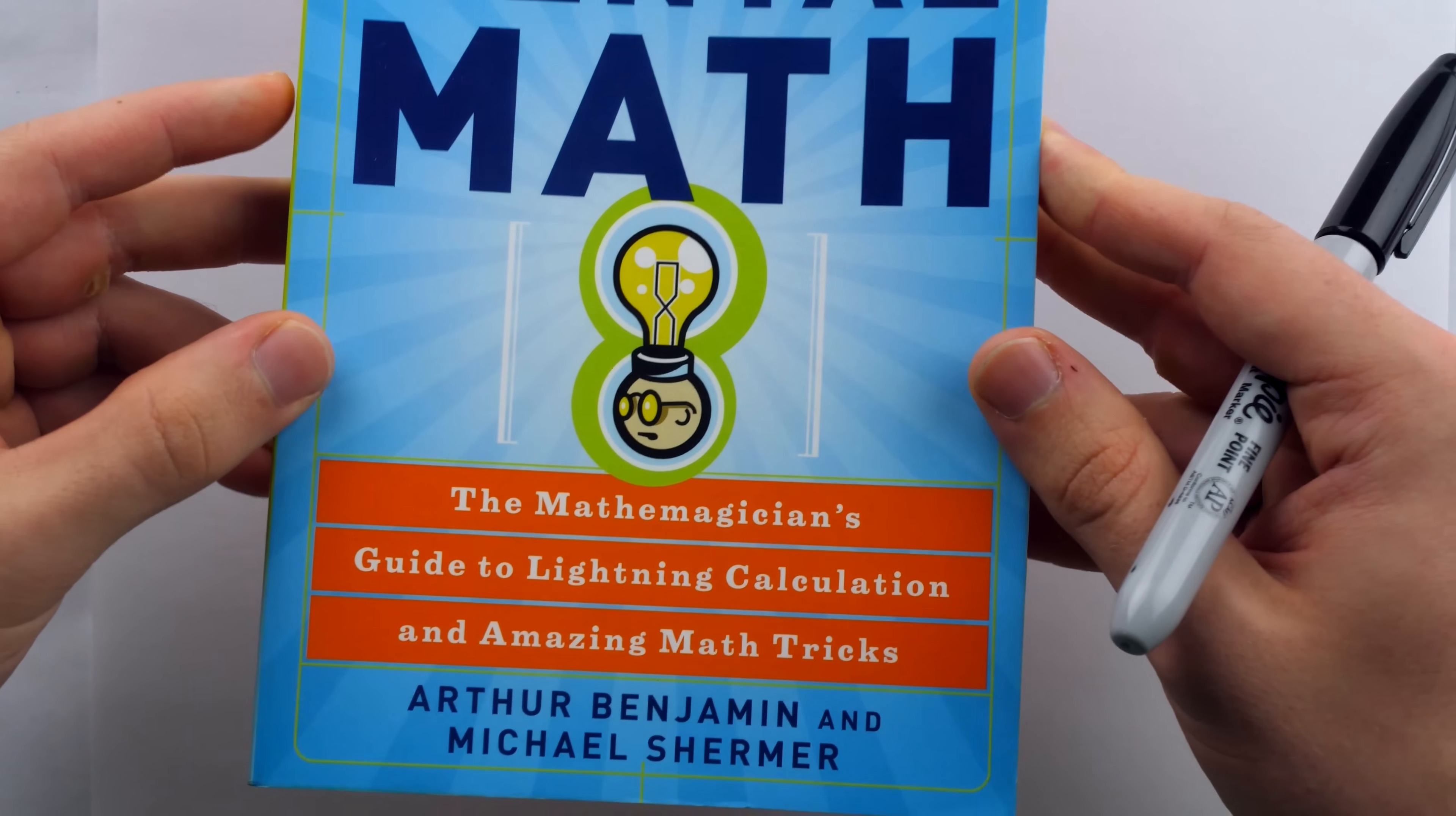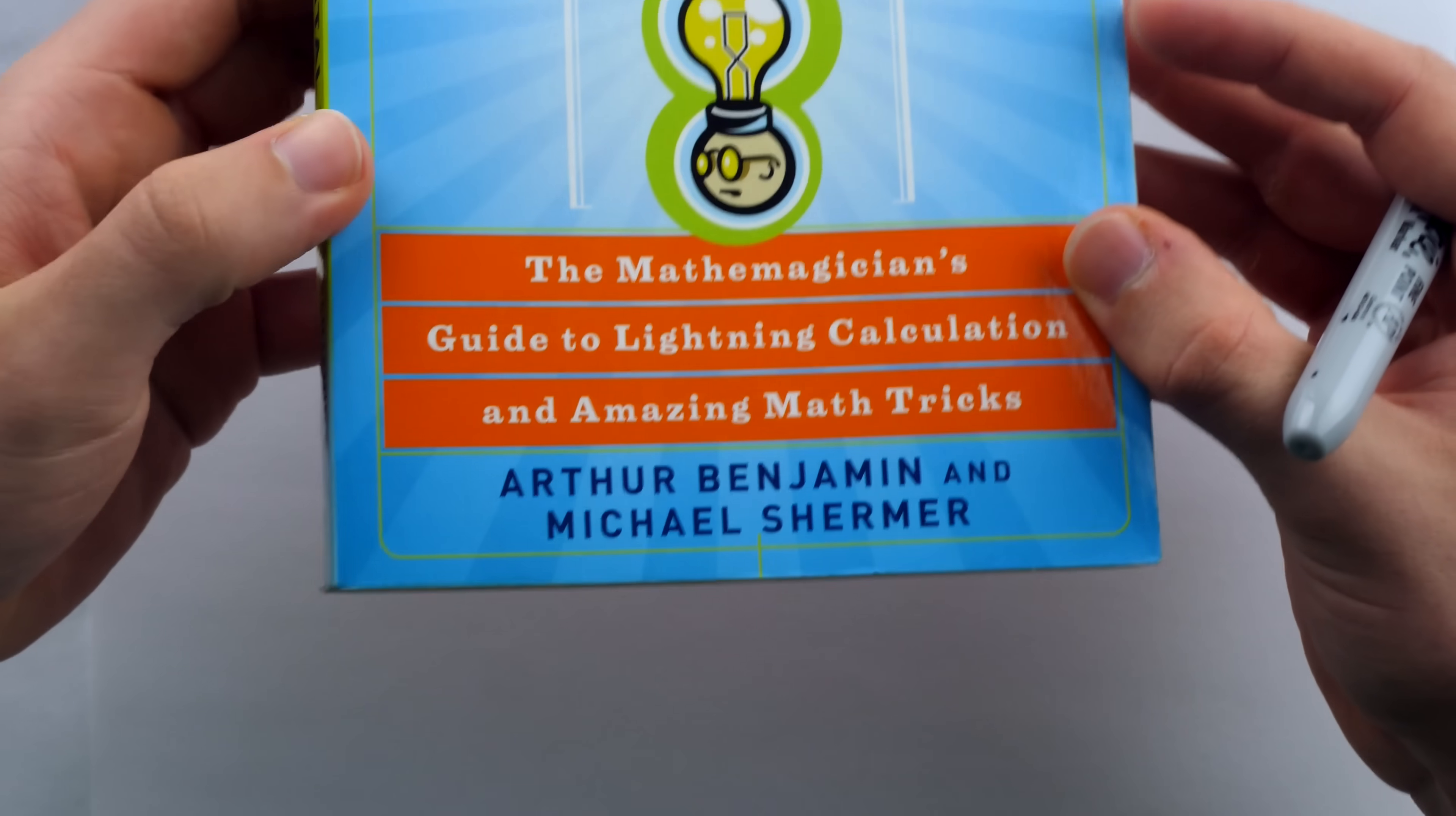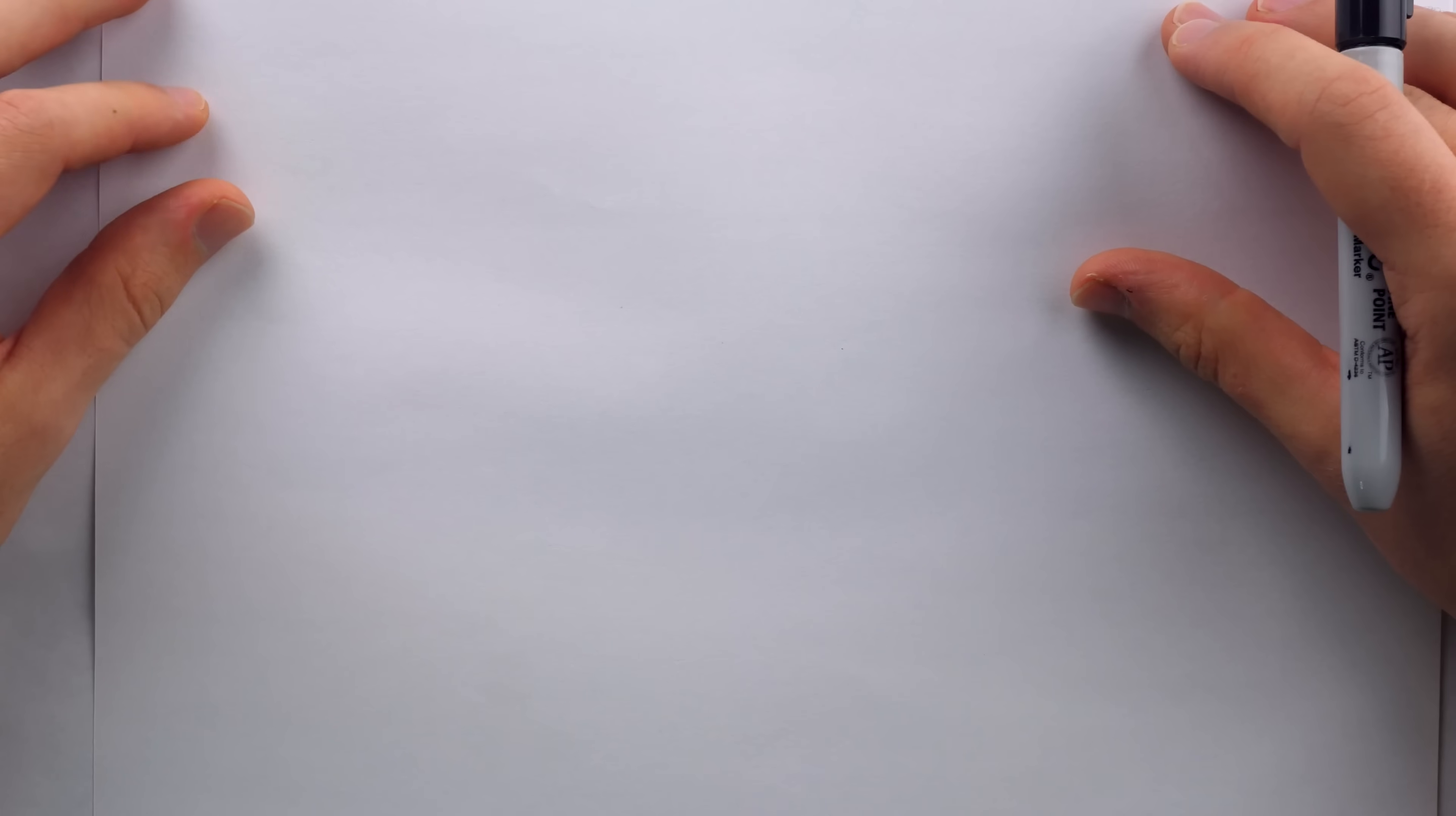I first read of this trick in this wonderful book, Secrets of Mental Math, by the mental math magician Arthur Benjamin. Very strongly recommend it if you want a great book full of mental math tricks. So I'm going to walk you through this trick, kind of talk to you as if you were the audience, and give you some tips on how I've sort of performed and narrated it throughout the years.